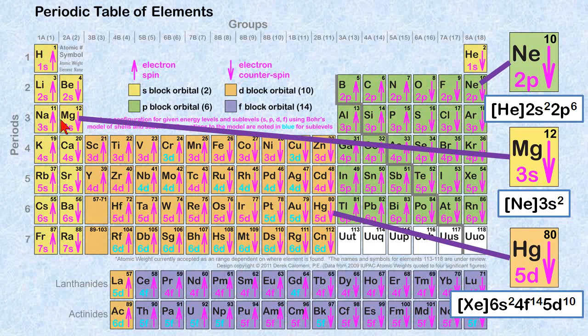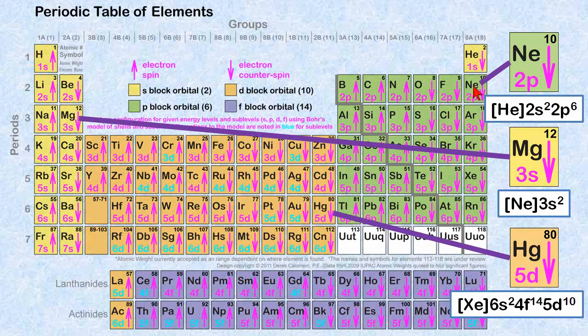Here's magnesium. Immediately for a shortcut, we go over to neon and say the electrons are like neon. Put neon in here. And then in the third shell, there's one, two electrons. So it's neon 3s2.